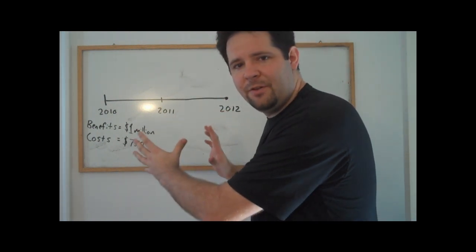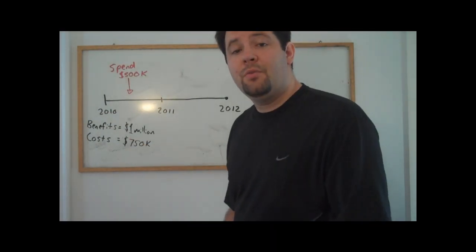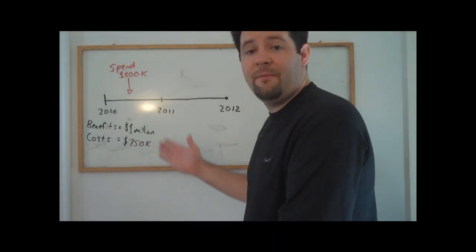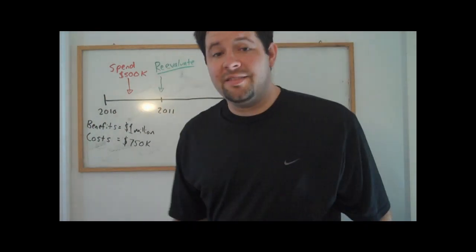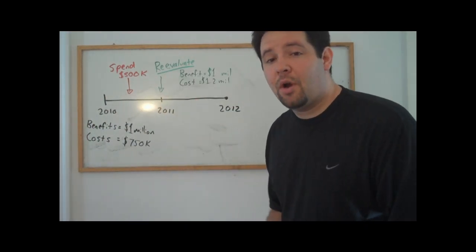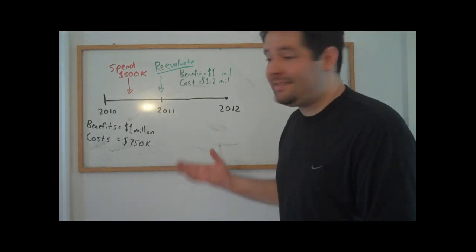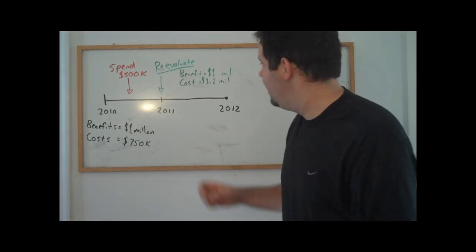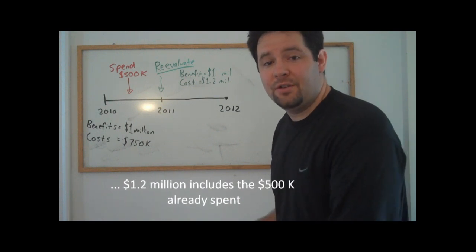So it's going to be a beneficial project. In the middle of 2010, suppose that we spent $500,000 on this project. Then at the end of the year we re-evaluate, and in this re-evaluation we discover that the benefit still is $1 million, but that the costs are $1.2 million in total.